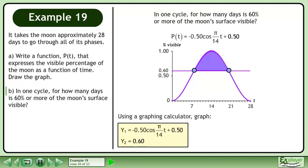Using a graphing calculator, graph y1 equals negative 0.50 cos of pi over 14t plus 0.50, and y2 equals 0.60. Use the intersect feature to get 7.90 and 20.10 days.